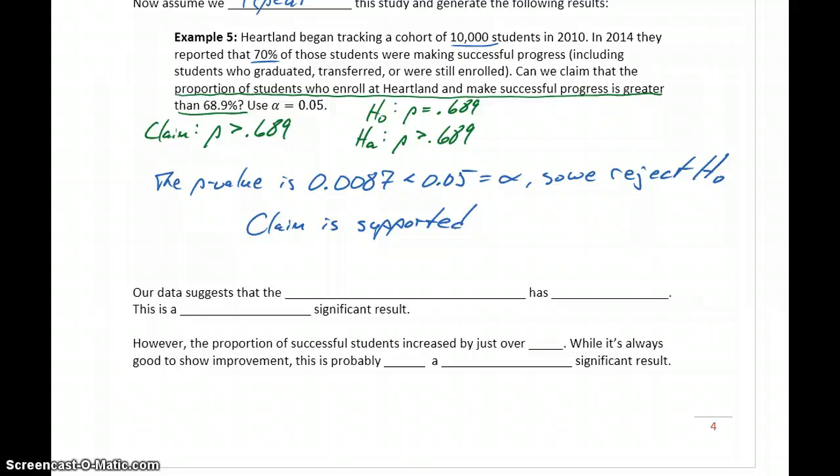So in this case, what we're reaching the conclusion of is that our data suggests that the population proportion has increased. So a previous study found it to be 0.689, so 68.9%. Now we're saying that success rate, that proportion has grown. And because of the results of our test, since our p-value is less than alpha, that is a statistically significant result.